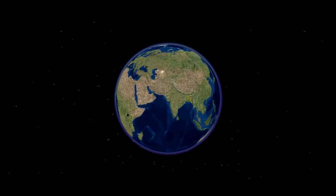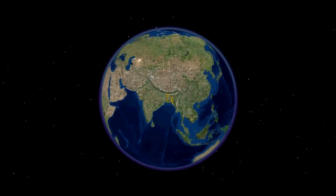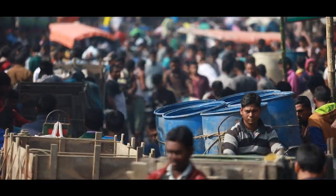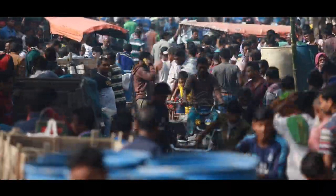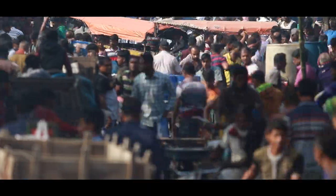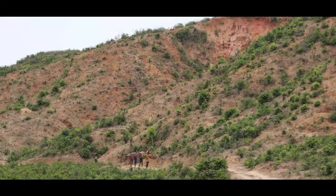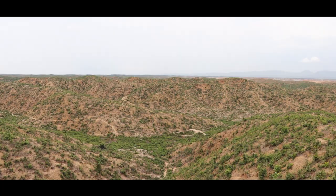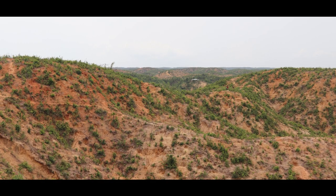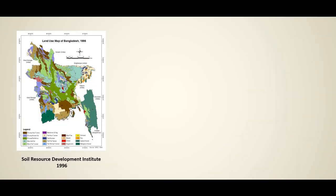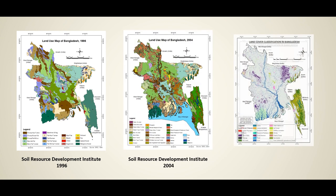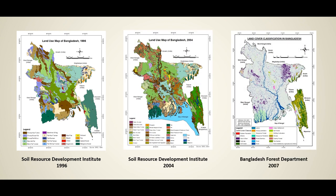Bangladesh is one of the most densely populated countries in the world. The pressure of this huge population on the limited land resource is changing the land covers rapidly, with diminishing amounts of forest and other natural resources. For several decades, various organizations in Bangladesh have been preparing land cover maps for different purposes. However, inconsistency in land cover definitions restricted comparison and change detection over time.